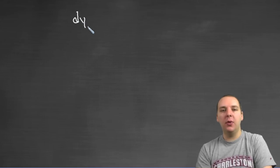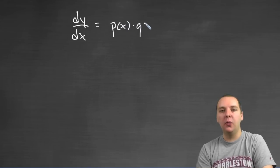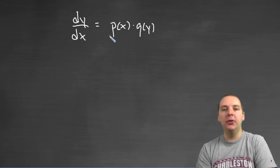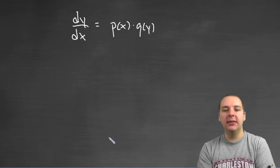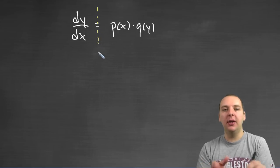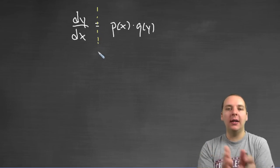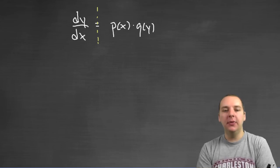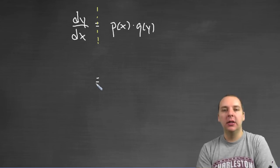Alright so here's the idea behind separation of variables. If you have dy/dx equals a function of X times a function of Y, then what you're able to do is sort these guys on either side of the equal sign. We can separate the X's to be on one side, and the Y's to be on the other.